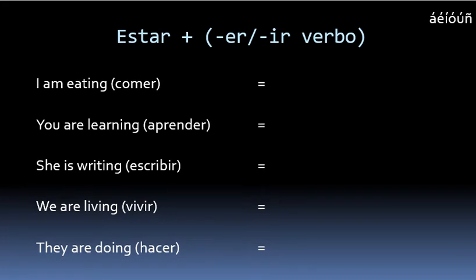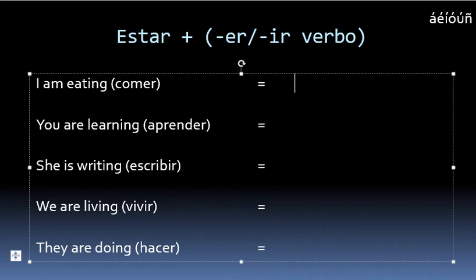Now for ER verbs and IR verbs — for regular ER and IR verbs, we are going to take those endings and change them to -iendo, I-E-N-D-O. So taking the phrase 'I am eating,' you could translate that as estoy comiendo.